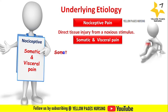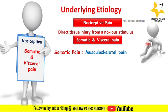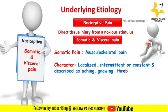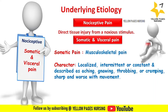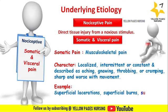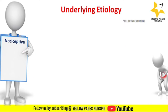Somatic pain is generally described as musculoskeletal pain. Many nerves supply the muscles, bones, and other soft tissues. It is characterized as well-localized, intermittent or constant, and described as aching, gnawing, throbbing, or cramping pain that gets sharp and worse with movement. Examples include superficial lacerations, superficial burns, and superficial abscess.